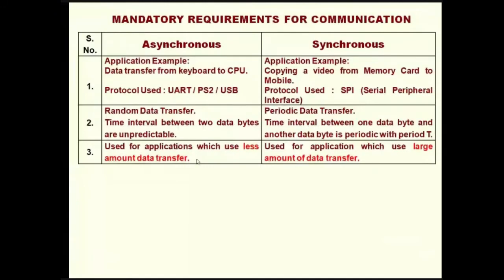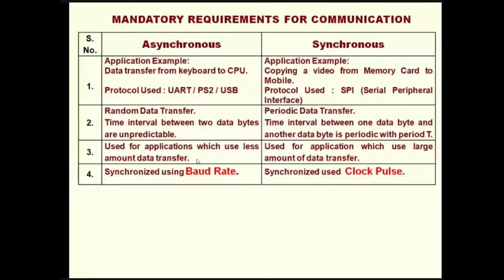For memory card and mobile, we use very large, high-speed data transfer. A very important point: synchronous serial communication uses a clock pulse for synchronizing. At the falling edge of the first clock pulse, the first data bit is sent; at the falling edge of the second clock pulse, the second data bit is sent; at the falling edge of the third clock pulse, the third data bit is sent. The transmitter notifies the receiver through a separate clock pulse — hence it is clock-based synchronization.